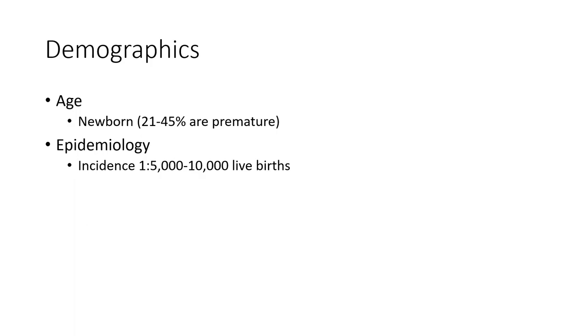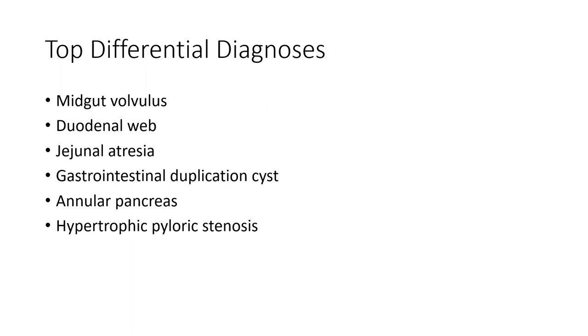In newborns, 21 to 45% are premature. Epidemiology and incidence: duodenal atresia occurs in approximately 1 in 5,000 to 10,000 live births.